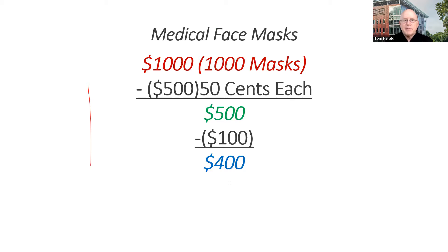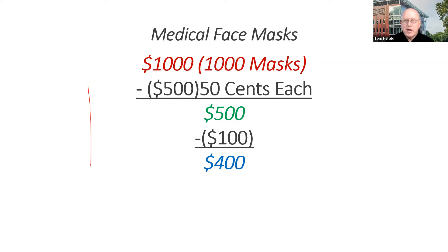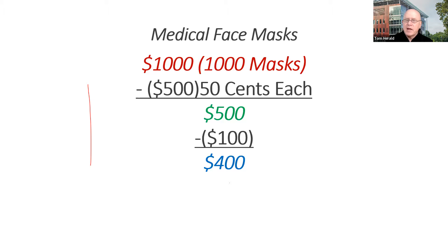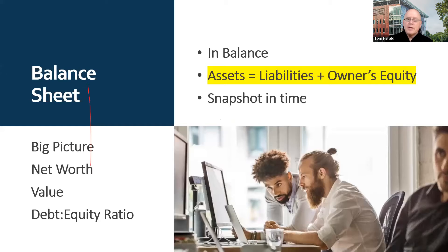At the beginning of the pandemic, my son and I found an opportunity to buy medical masks from Hong Kong. Say they cost 50 cents each and we sold them for a dollar. On a thousand masks, that's $500 gross profit. Deduct expenses — say a website — and we end up with a net profitability of $400. This simple formula applies to all businesses. I don't want to oversimplify it, but I want to keep the language basic.